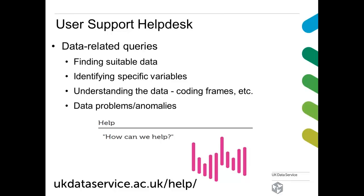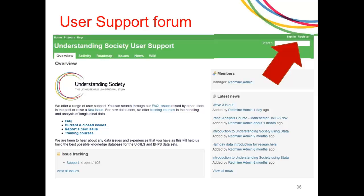We have a support help desk at the UK Data Service dealing with all sorts of data-related queries — helping you find data, understand coding frames, and any problems you identify. You can email us at support@ukdataservice.ac.uk or use our website. Understanding Society also has its own user support forum, which is a really valuable resource — you can log a query directly with the Understanding Society team, which is particularly useful for technical or detailed questions. You can also search for previous issues in case somebody has already asked the same question.